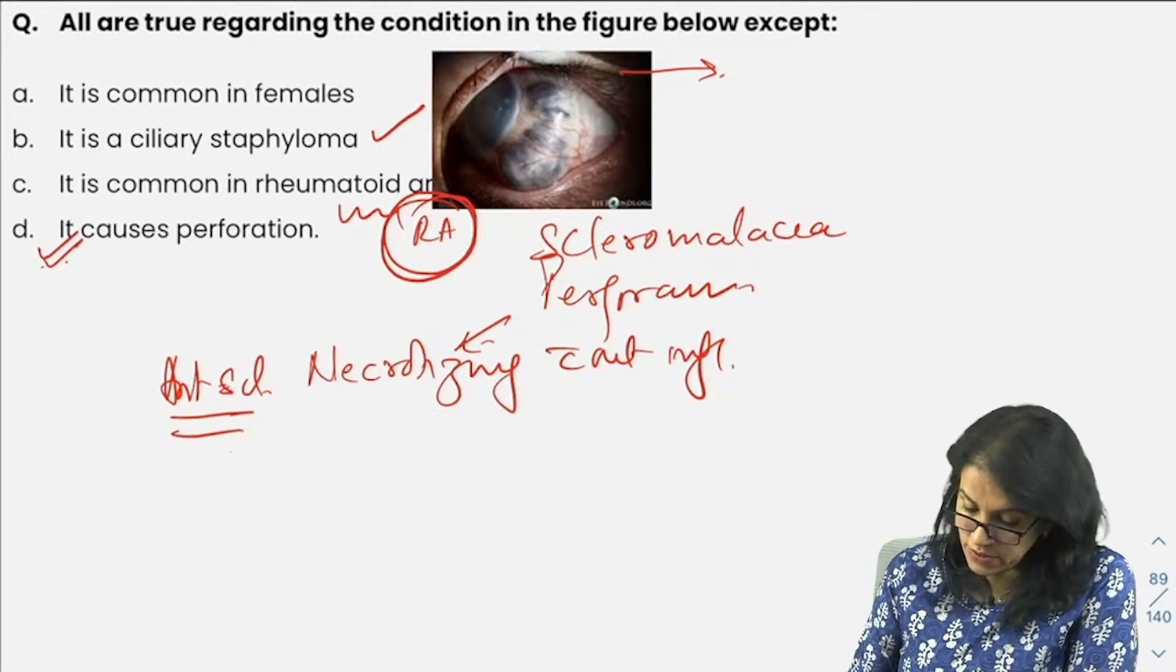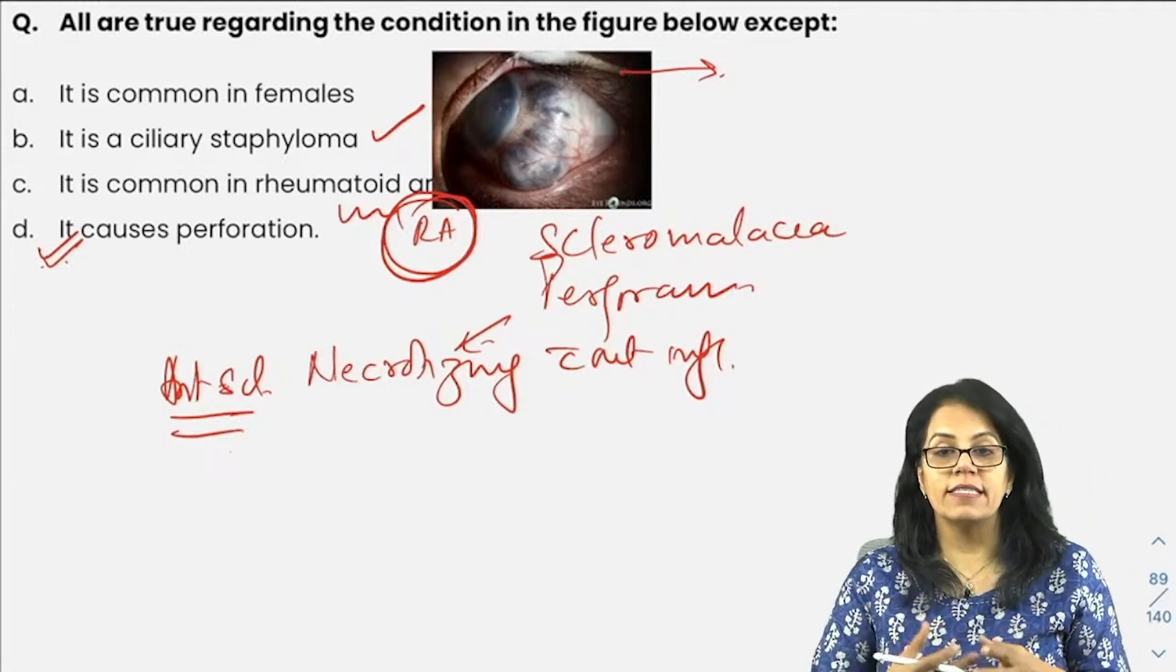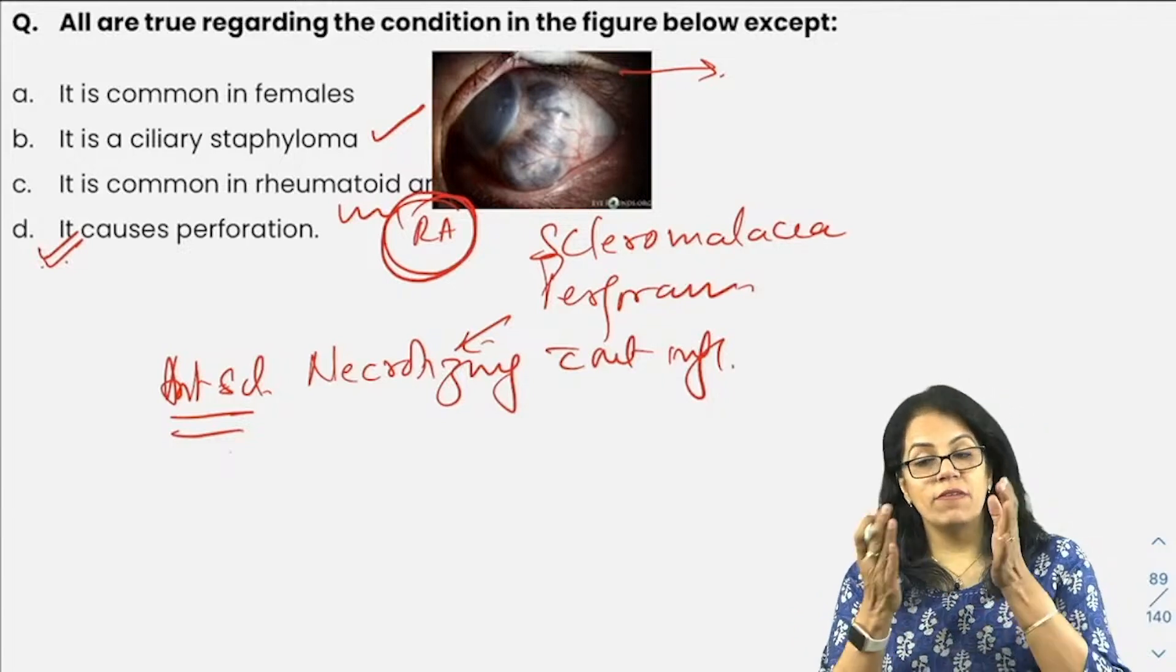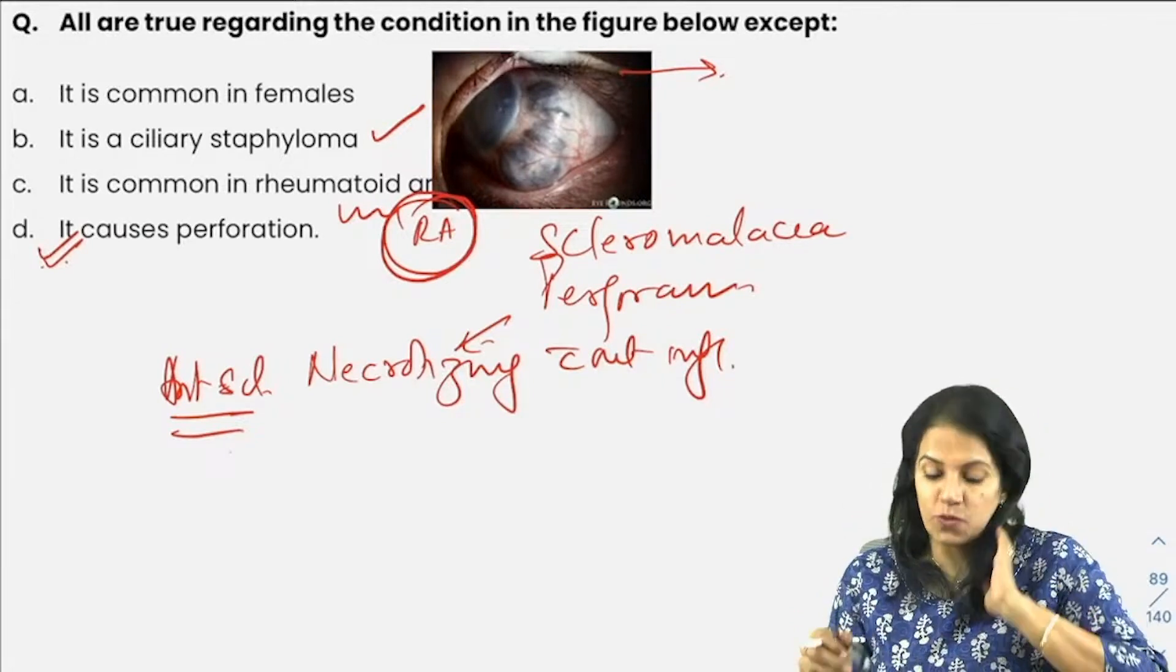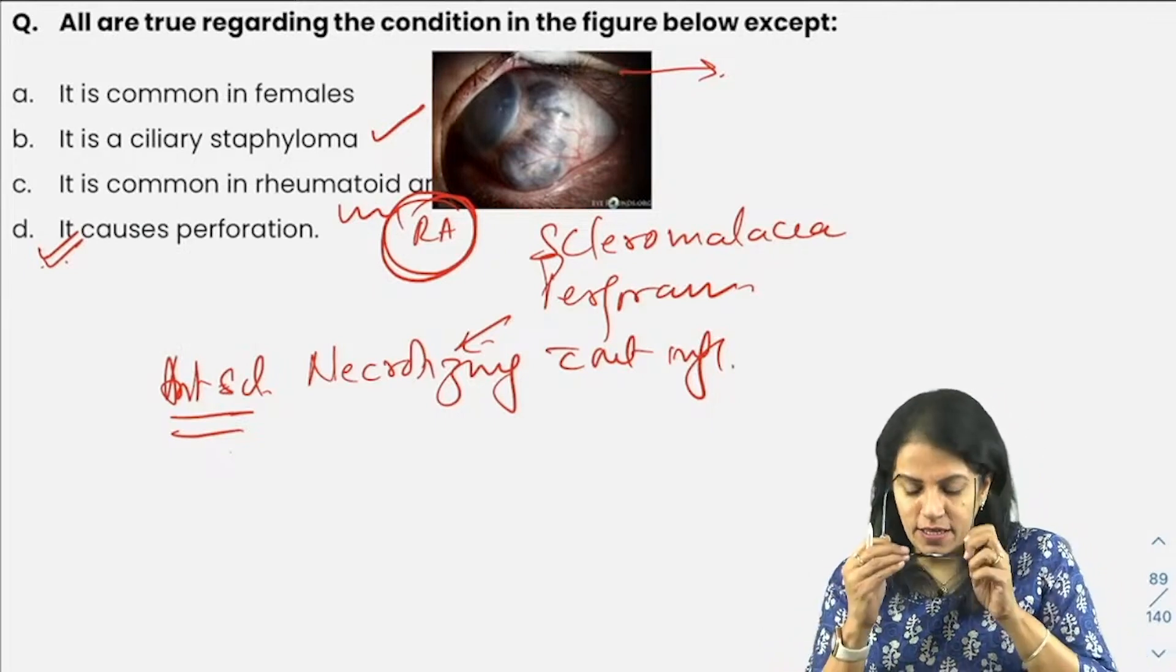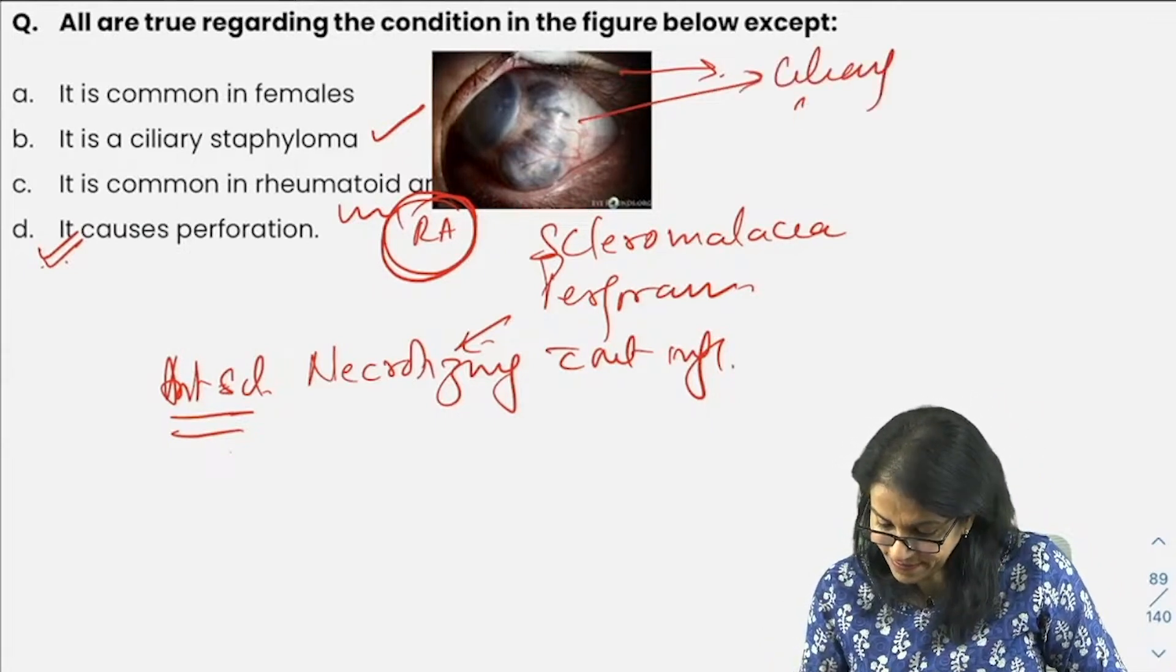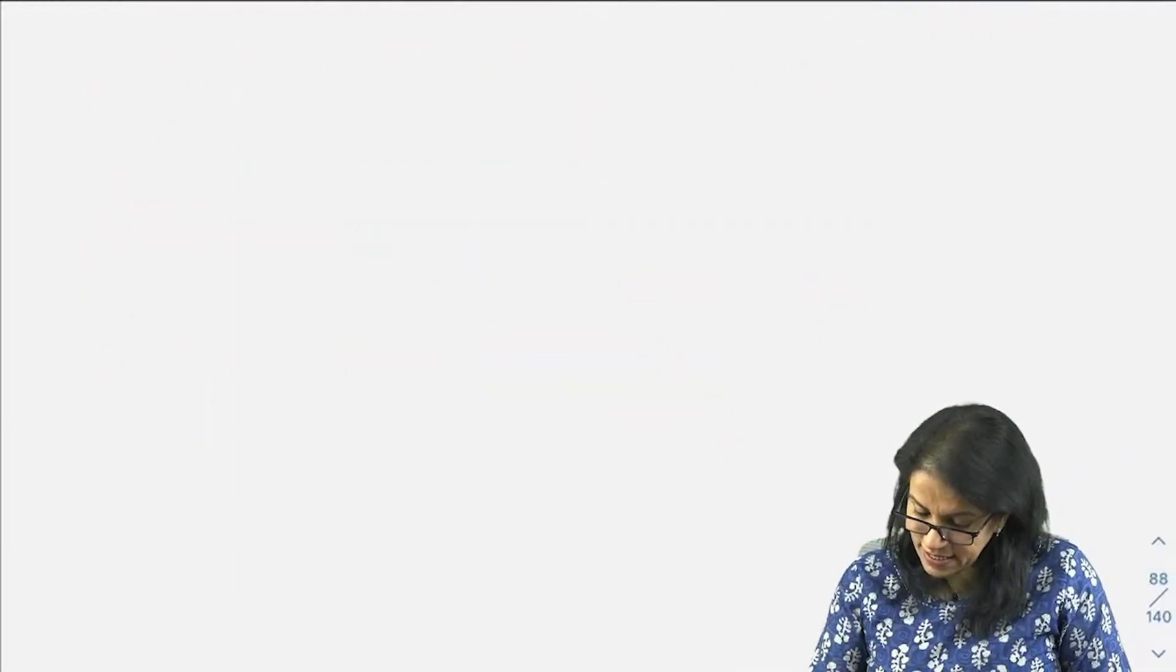Why do you answer B? Because it is scleromalacia perforans. Scleritis is causing ectasia, that is what ciliary staphyloma is. If you remember, we have learned that ciliary staphyloma, one of the causes is scleritis. This is what you see here. So it is the ciliary staphyloma again. Staphylomas, I hope you all remember now.